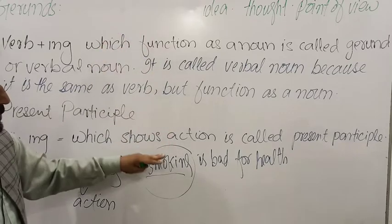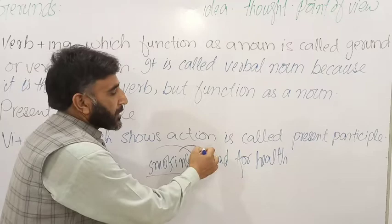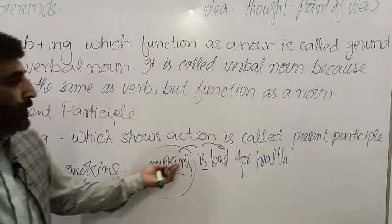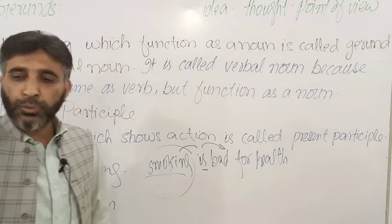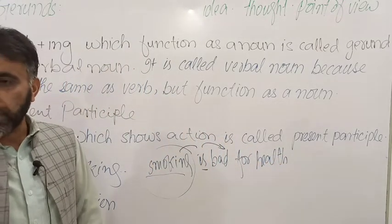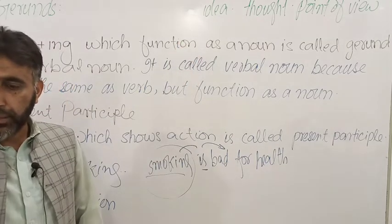Gerund is used as subject - subject means before the verb - and also used as object, after the verb. For example, he says 'smoking is bad for health,' and 'I don't like smoking.' Smoking came at the end as object. But here it talks about idea, thought, or point of view.